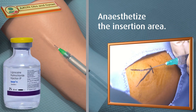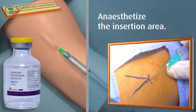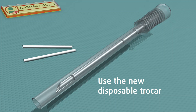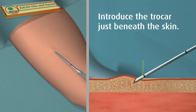Jadelle is provided with a disposable trocar that is sharp enough to penetrate the skin directly, so it can be used to puncture the skin and insert the rods without the need for an incision. The trocar has two marks: one close to the handle and one close to the tip. The mark closer to the handle indicates how far the trocar should be introduced under the skin before loading each implant. The mark closest to the tip indicates how much of the trocar should remain under the skin after insertion of the first implant.